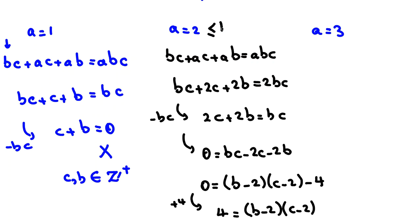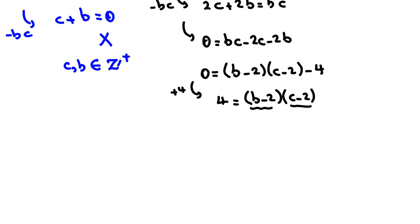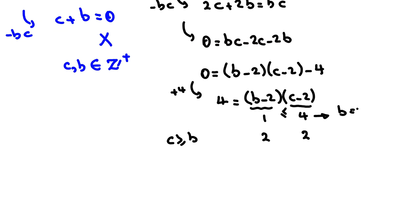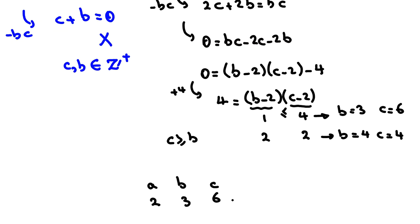In this case A = 2, and we know A ≤ B ≤ C. So B and C are at least 2; but if B or C equals 2, we get 0 on the left side, which is not 4. So B and C are at least 3. The factor pairs of 4 with B ≤ C are (B-2, C-2) = (1, 4) giving B = 3, C = 6, and (2, 2) giving B = 4, C = 4. So we have two solutions: (2, 3, 6) and (2, 4, 4).